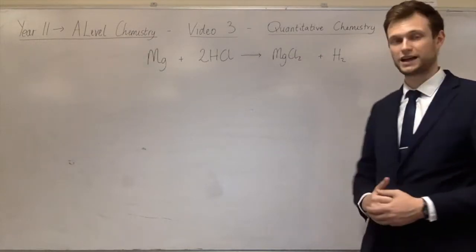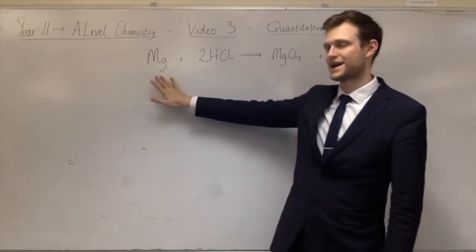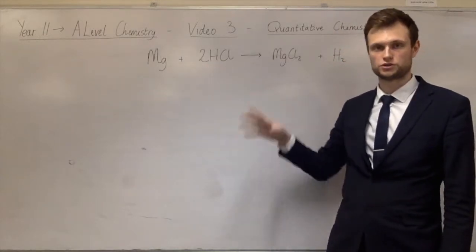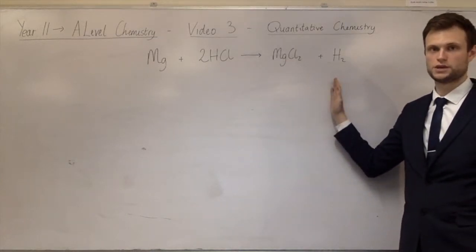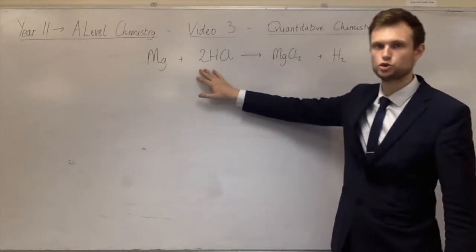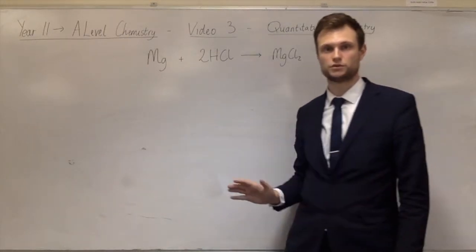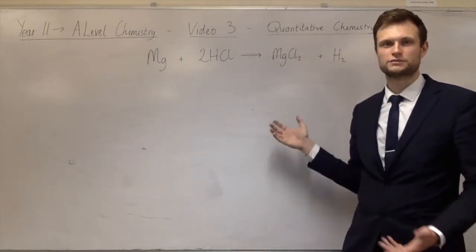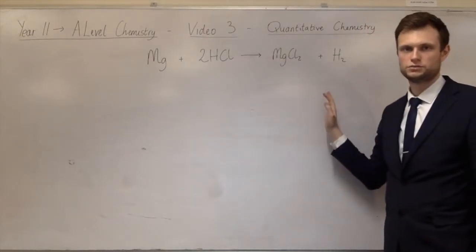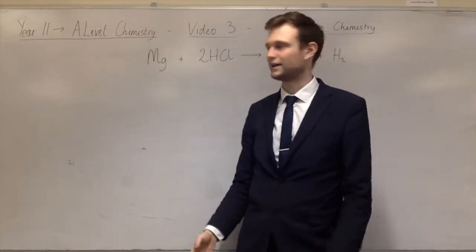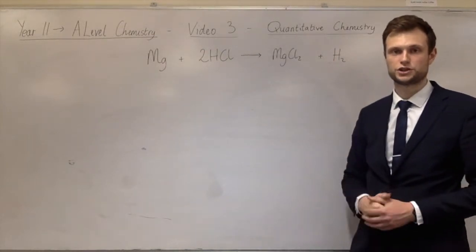Firstly I'm going to talk about what this equation actually means. It means that one atom of magnesium reacts with two molecules of hydrogen chloride to make one unit of magnesium chloride and one molecule of hydrogen. Those numbers are important — once you know what happens with one atom you can work it out for literally any number of atoms. This is just the simplest ratio: one to two to one to one. You could write two Mg and four HCl making two MgCl₂ and two H₂, which is just the same ratio multiplied by two.